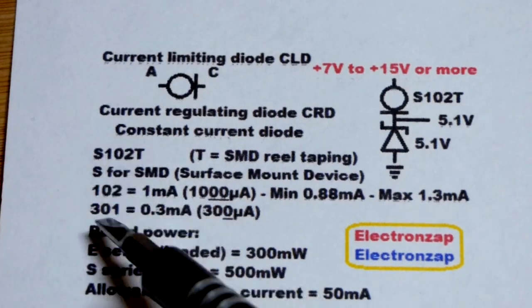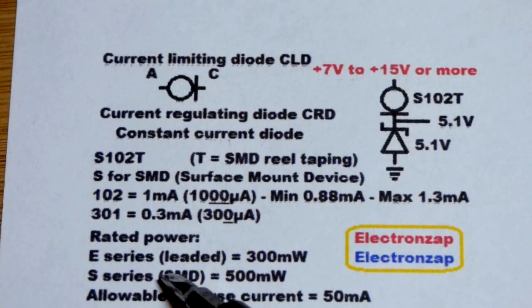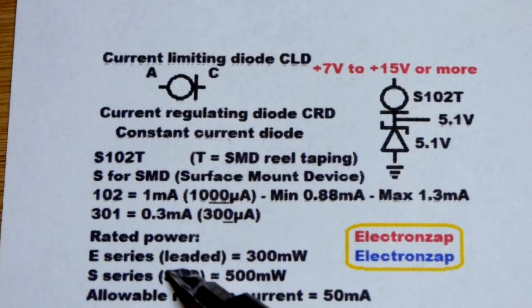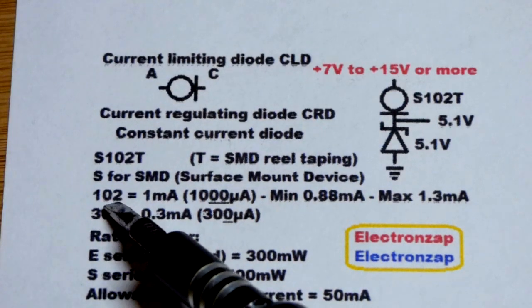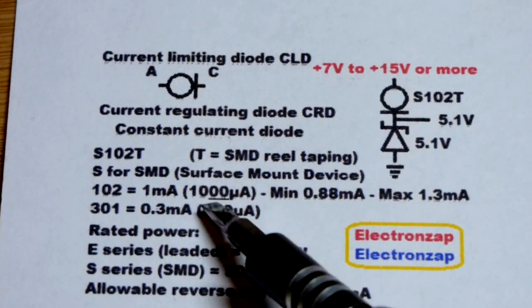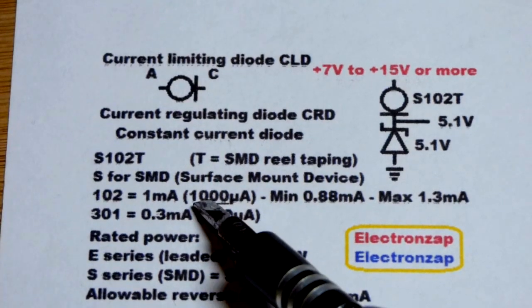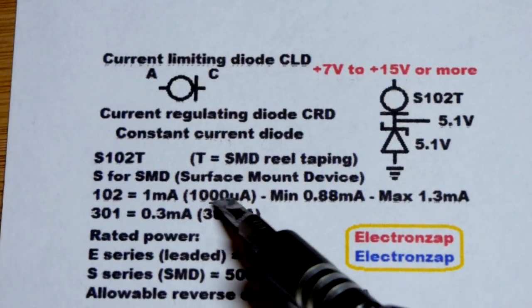The E series, if it's an E102, it would look like a regular diode. And so that's leaded, not leaded, but it's spelled like leaded, but it's leaded. So in any case, the S102, as I said, one milliamp, that's actually 1,000 microamps. So one, zero, and then two is for two more zeros.